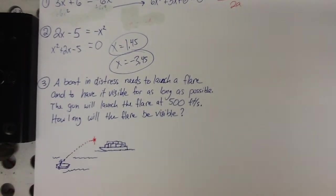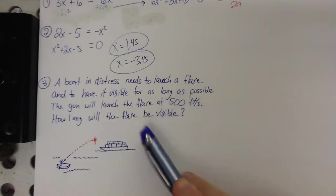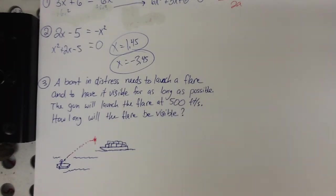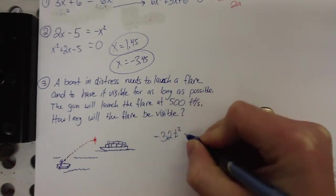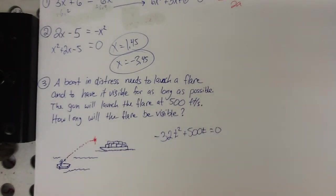Alright. I drew you a pretty little picture for this one, in case the word problem is kind of scary, that maybe you could understand it. But we've got a boat in distress, and it sees a barge coming by, so it launches a flare up in the air. And obviously, you want your flare to be visible, so you want it to be in the air as long as it can be. So here's the deal. The gun's going to launch this flare at 500 feet per second. The question is, how long will it be visible? I'm going to go ahead and give you the equation here. It's negative 32t squared plus 500t equals zero. This would basically say gravity plus how fast I shoot it in the air equals when it hits the ground.